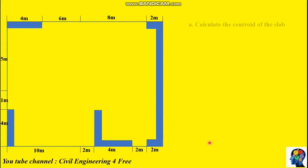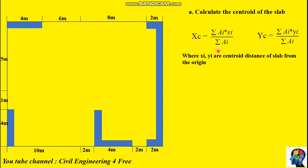The first step will be to calculate the centroid of the slab for the center of mass. The centroidal distance xc is given by the summation of area Ai multiplied by centroidal distance xi, divided by the summation of area. For yc it will be the summation of Ai multiplied by centroidal distance in the vertical direction divided by summation of Ai. Before calculating, we assign the origin at (0,0), with the positive x-axis to the right and the positive y-axis below the origin.